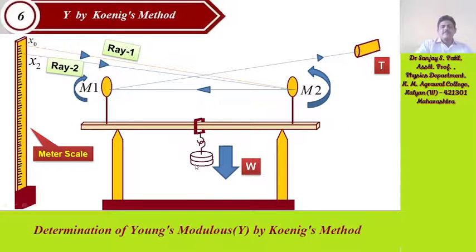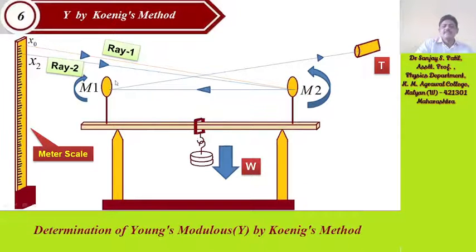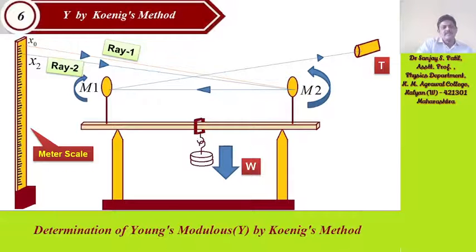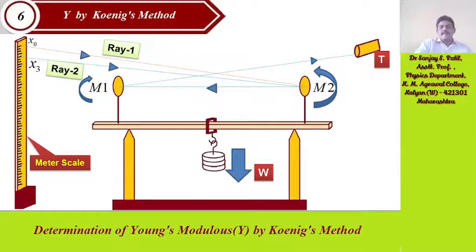When the second weight is applied, the shift is from x0 to x2 — shown in the diagram. Mirror M2 bends further and mirror M1 bends accordingly, and the beam bends at the center. The bending action is the flexure, and we note x2 minus x0. When the third weight is applied, the reading shifts from x0 to x3.